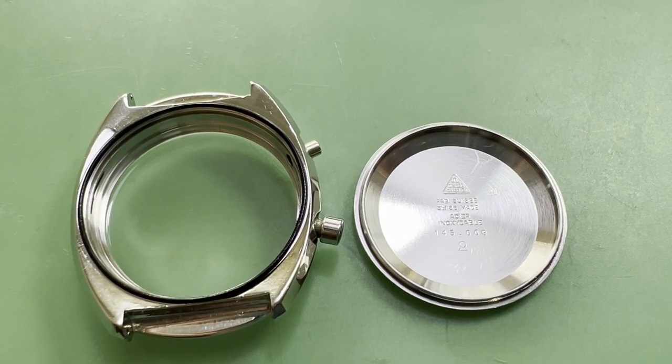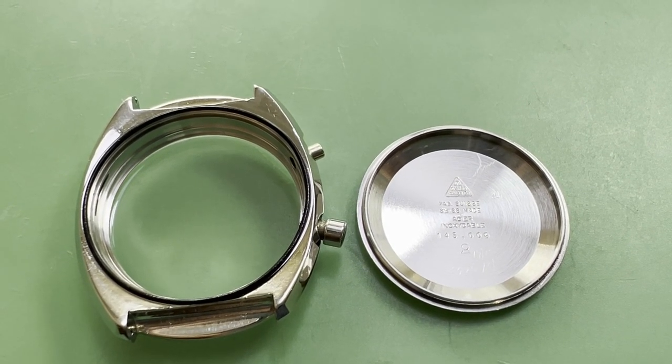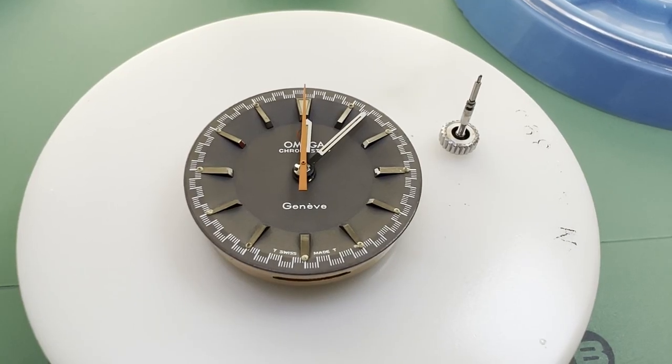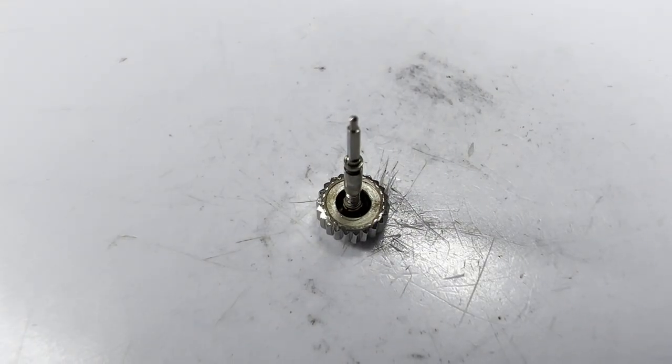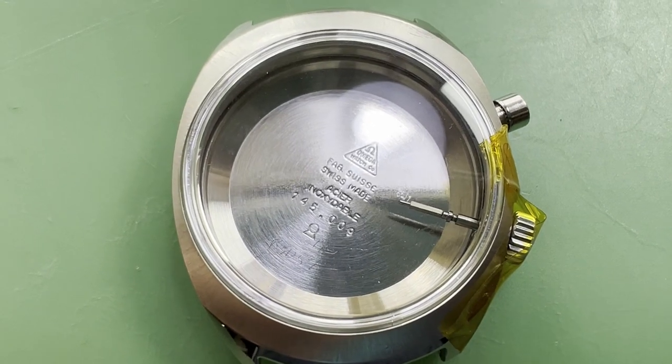The watch will now be prepared for water resistance testing. A new back gasket is greased and installed. The crown is removed from the movement and the crown gasket re-greased then taped into the case.